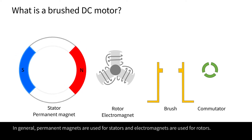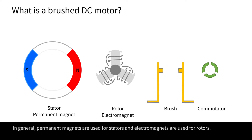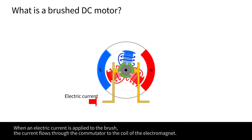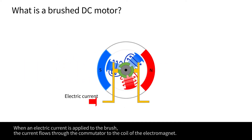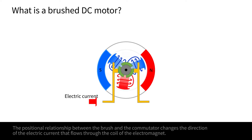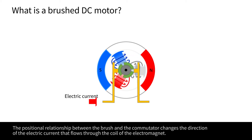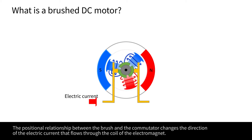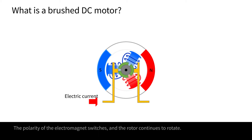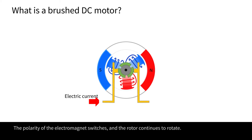In general, permanent magnets are used for stators, and electromagnets are used for rotors. When an electric current is applied to the brush, the current flows through the commutator to the coil of the electromagnet. The positional relationship between the brush and the commutator changes the direction of the electric current that flows through the coil of the electromagnet. The polarity of the electromagnet switches, and the rotor continues to rotate.